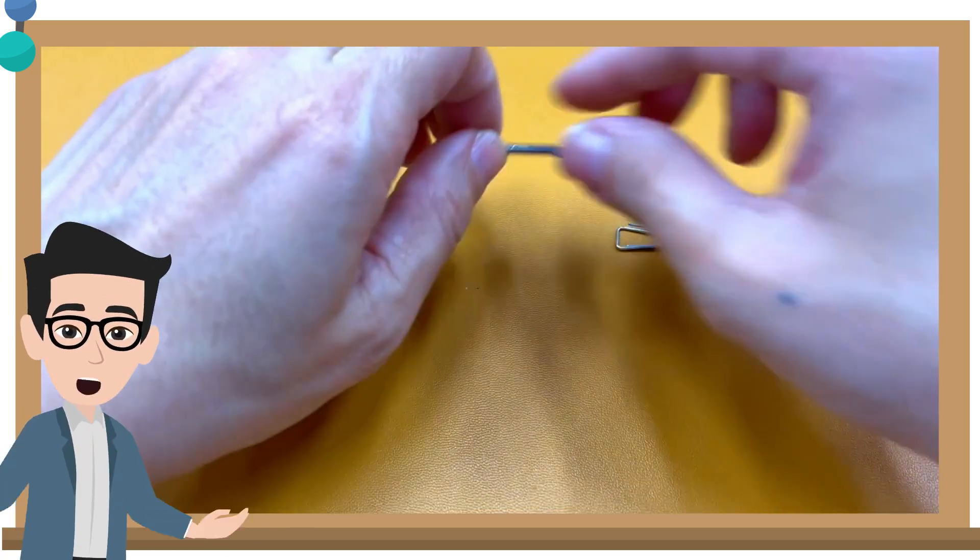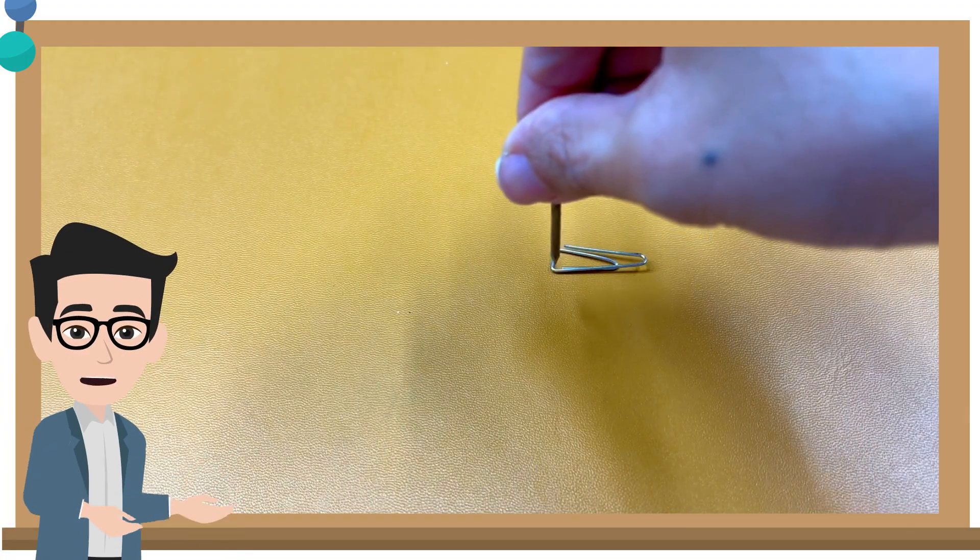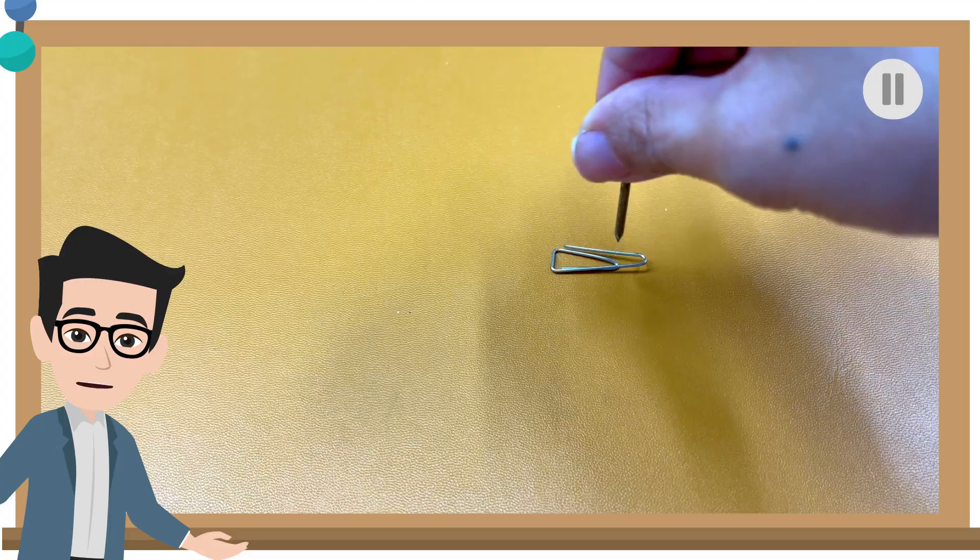First, place the iron nail near the steel paper clip. Does the steel paper clip get attracted to the iron nail? Pause and discuss.